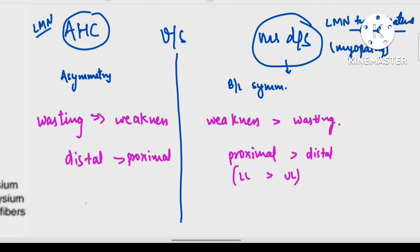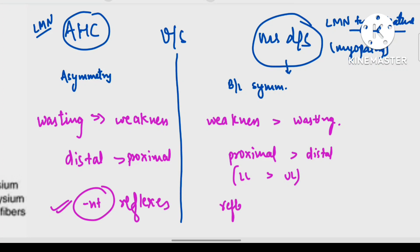Now talking about reflexes: as this is an LMN lesion, reflexes will be absent in anterior horn cell disease. In case of muscle disease, initially reflexes will be present because the neuromuscular junction is normal, but in later stages reflexes will become absent.